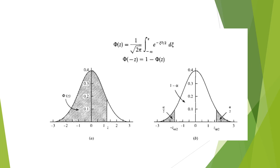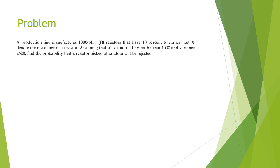The phi table provides values only for positive z. For negative z, we use symmetry: the area under the curve from minus infinity to -z mirrors the area from z to infinity. So phi(-z) = 1 - phi(z). This means the area to the left of a negative value equals the total area (1) minus the area to the left of the corresponding positive value.